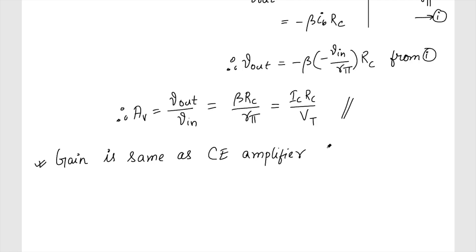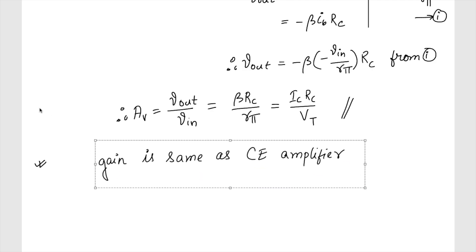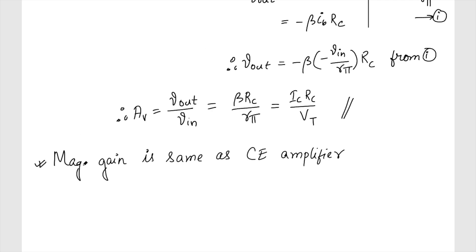So the magnitude of the gain of the common base amplifier is the same as the CE amplifier, but the phase is different — the common base amplifier does not invert the signal, unlike the CE amplifier.